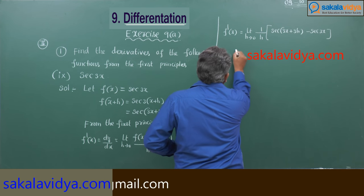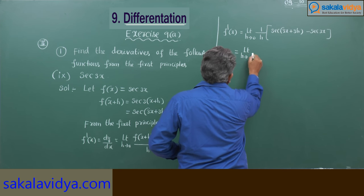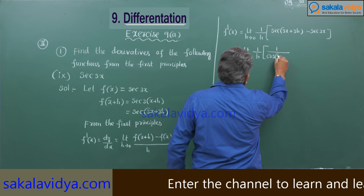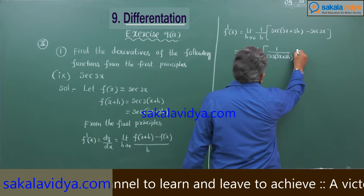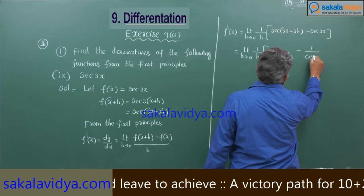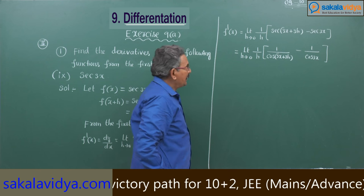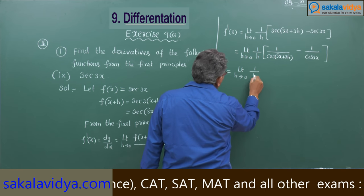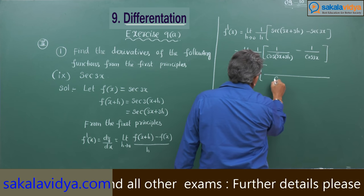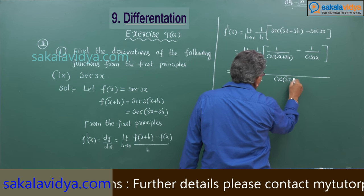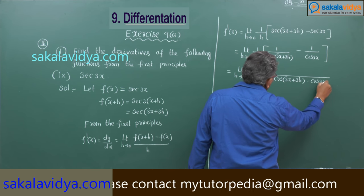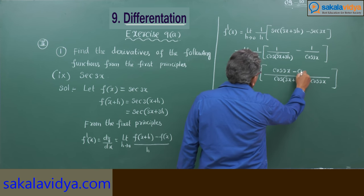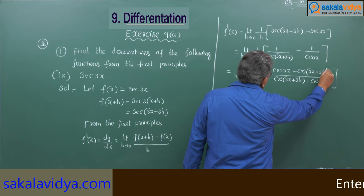Now, limit h tends to 0, 1 by h. This can be written as 1 by cos(3x plus 3h) minus 1 by cos(3x), which simplifies to limit h tends to 0, 1 by h · [cos(3x) minus cos(3x plus 3h)] divided by cos(3x plus 3h) into cos(3x).